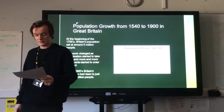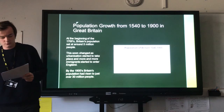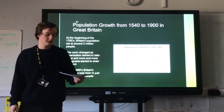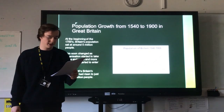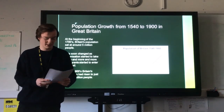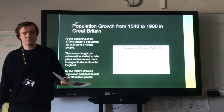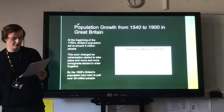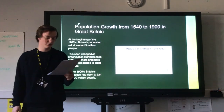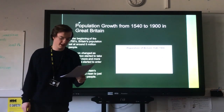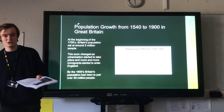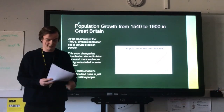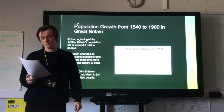As Britain started becoming more of an urban society, with more people living in towns and cities rather than villages, the population grew. There were also many immigrants coming into Britain, most notably from Ireland during the Potato Famine in the 1840s, and also from Russia during the 1880s where the Tsar began persecuting Jewish people. A number of them fled and settled in the eastern end of London.